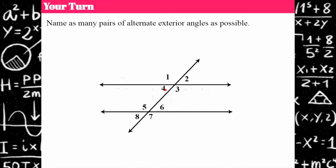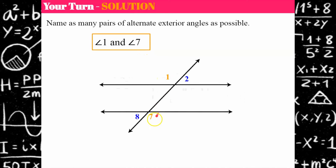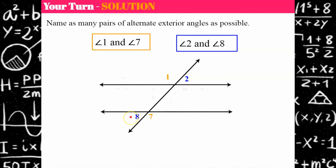Can you name as many pairs as possible of alternate exterior angles? Go ahead and pause. We have angles 1 and 7 — alternate sides of the transversal on the exterior of the parallel lines — and angles 2 and 8, also on alternate sides of the transversal and the exterior of the parallel lines.